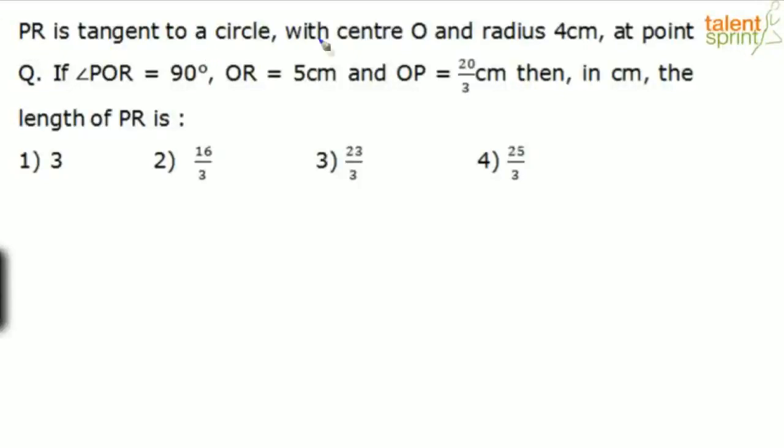PR is a tangent to a circle with center O and radius 4 cm at point Q. If angle POR is 90 degrees, OR is 5 cm and OP is 20 by 3 cm, then in centimeters the length of PR is. The answer options given are 3, 16 by 3, 23 by 3 and 25 by 3.